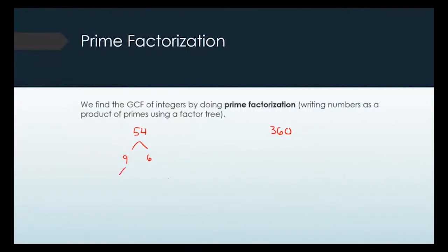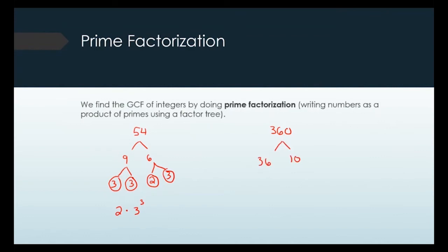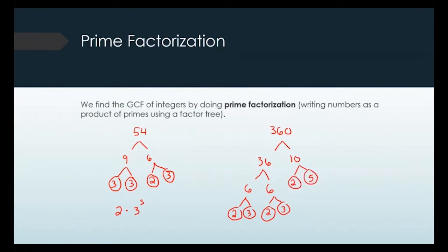So 54 is 9 times 6. Nine is 3 times 3 — both prime. Six is 2 times 3 — both prime. You want to break them down as far as they can go. So 54 equals 2 times 3 to the third power. For 360, I'll use 36 times 10. Then 36 breaks into 6 times 6, and each 6 is 2 times 3. I always circle my prime numbers so I know I'm done. And 10 is 2 times 5. So 360 equals 2 to the third times 3 squared times 5.